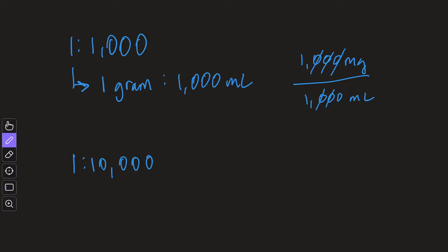So if we work this out, we find out that we have 1 milligram per mil as our concentration.